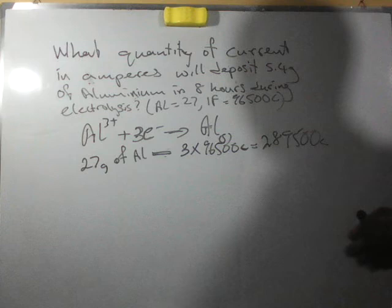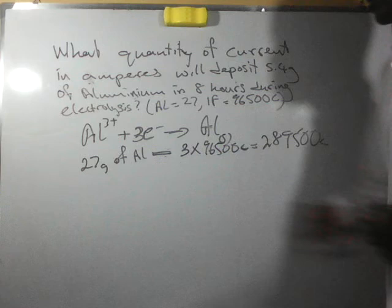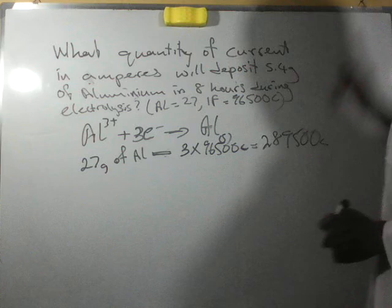So then we want to know the quantity of electricity - this is the quantity of electricity that can deposit 27 grams of aluminum.